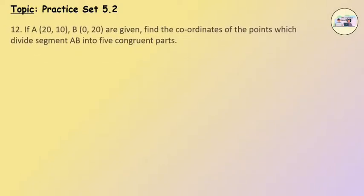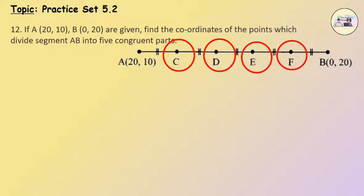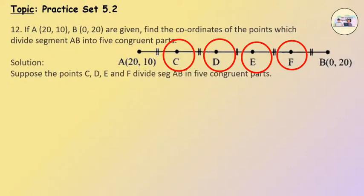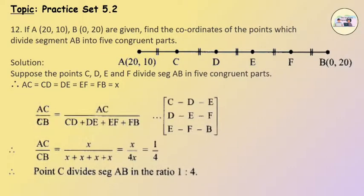Question 12. If A(20, 10) and B(0, 20) are given, find the coordinates of the points which divide segment AB into 5 congruent parts. Suppose points C, D, E and F divide segment AB into 5 congruent parts, so AC equals CD equals DE equals EF equals FB. Let each equal x. Therefore, AC upon CB equals x upon 4x, which equals 1 by 4.